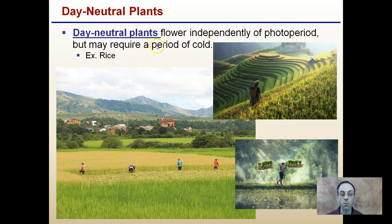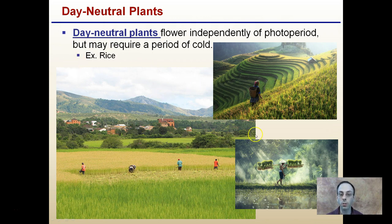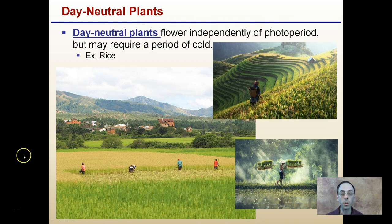Lastly, there are day-neutral plants, which flower independently of photoperiod, though they may require a period of cold in some instances. Rice is a prime example — it will flower regardless of a lengthening day, a shortening day, or a burst of light. It is a prime example of a day-neutral plant.